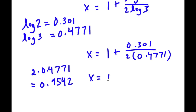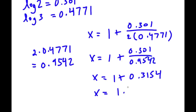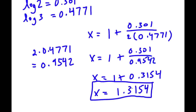So I have x is equal to 1 plus 0.301 over 0.9542. Simplifying 0.301 over 0.9542 gives 0.3154. So 1 plus 0.3154 is simply 1.3154, meaning x is equal to 1.3154.